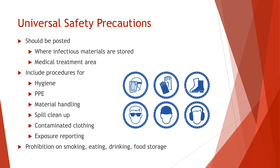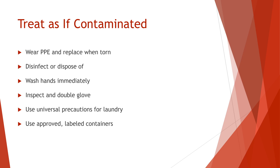Universal precautions also include procedures for contaminated clothing and exposure reporting, as well as a prohibition on smoking, eating, drinking, or food storage in areas where bloodborne pathogens may be present. It is important that you treat all blood or potentially infectious body fluids as if they are contaminated. Always wear personal protective equipment in exposure situations. Replace PPE that is torn or punctured. Properly disinfect or dispose of used PPE, and remember to wash your hands immediately after removing PPE.